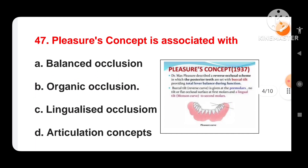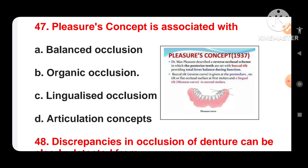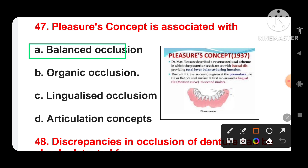Next question: Pleasure's concept is associated with — options are balanced occlusion, organic occlusion, lingualized occlusion, or articulation concept. The Pleasure concept was given in 1937 by Dr. Max Pleasure, who described a reverse occlusal scheme in which the posterior teeth are set with a buccal tilt to provide total bilateral balance during function. The buccal tilt is seen in premolars and the first molar has a flat surface, with a lingual tilt in the second molar. This concept is associated with balanced occlusion.